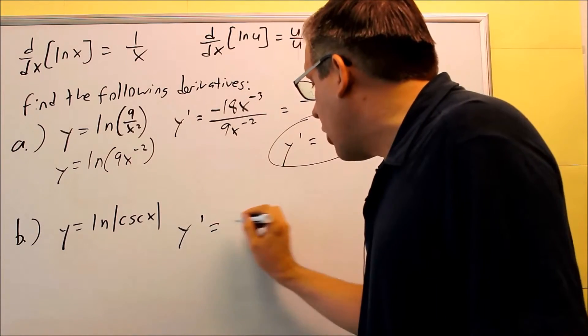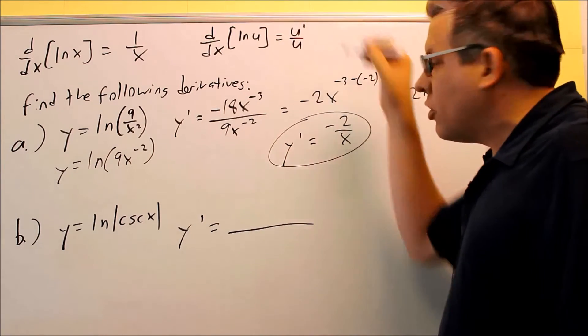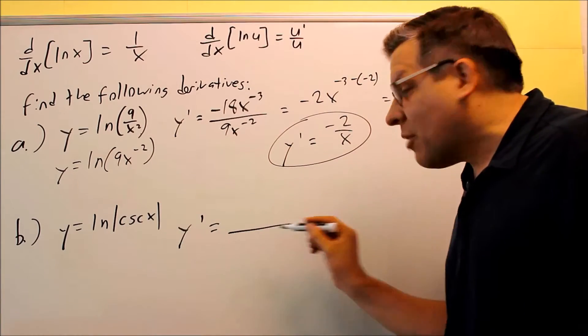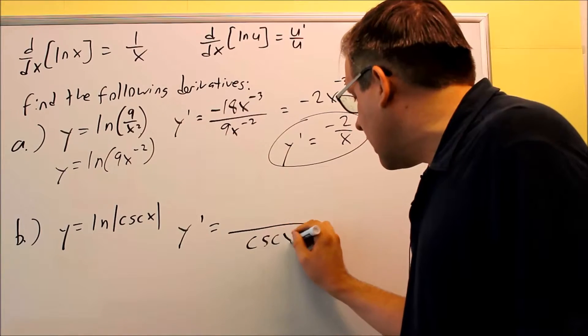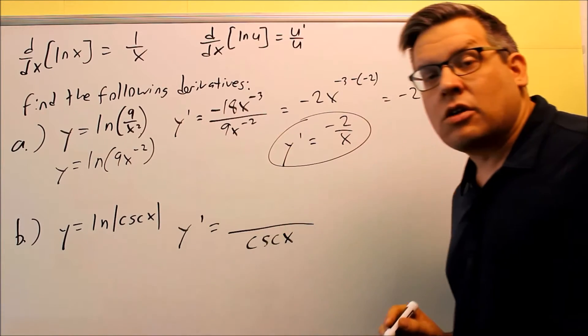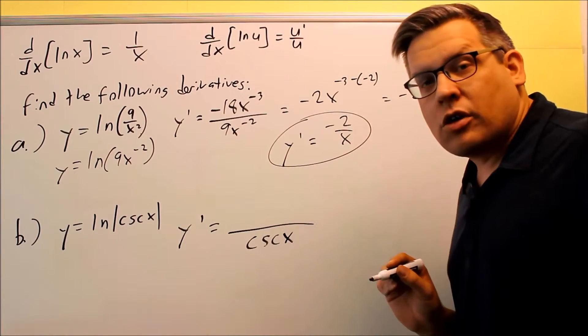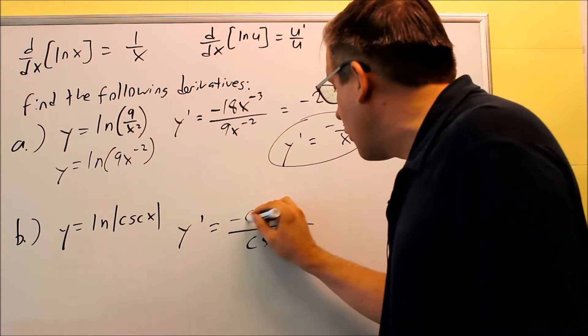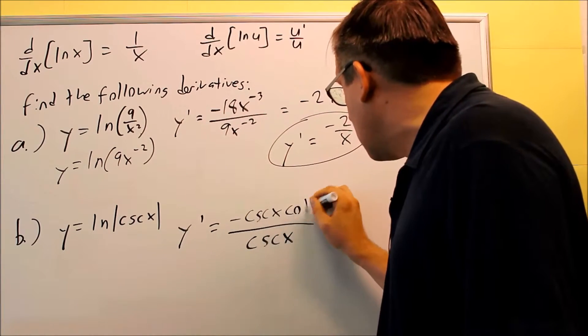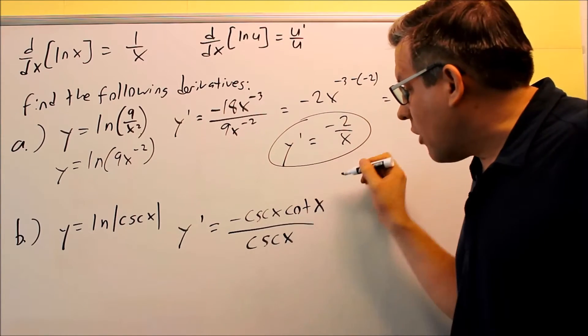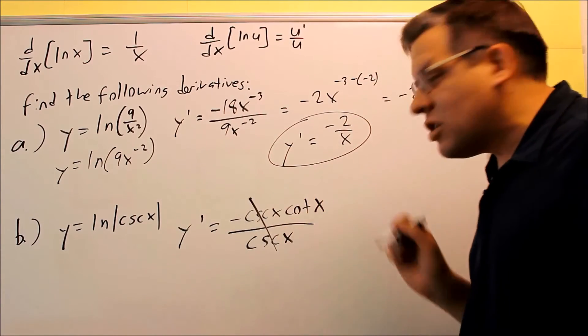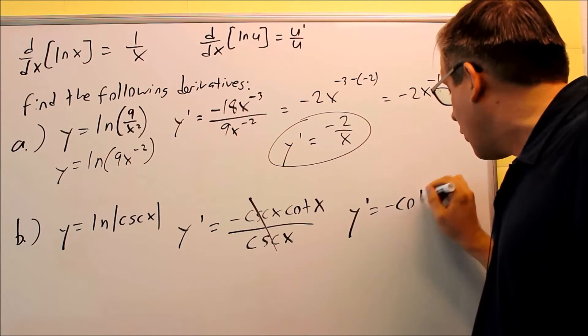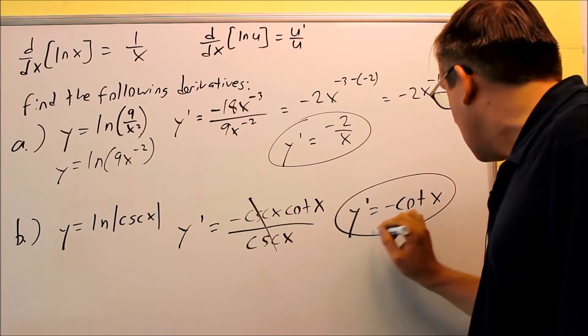So if I want to find my y prime, I'm going to follow the same formula, u prime over u. I've got to take the derivative of the inside, divide it by what was originally on the inside. So I'm going to put cosecant down here, because that's originally what my u is. On top, I want to do the derivative of cosecant x, which is negative cosecant x cotangent x. You can cancel out these cosecants, and then your final answer, y prime is going to be negative cotangent x.